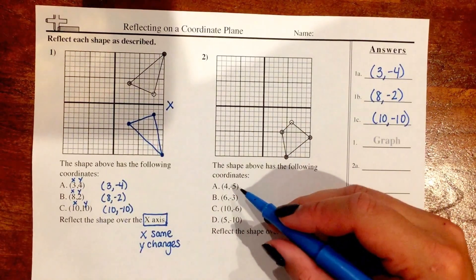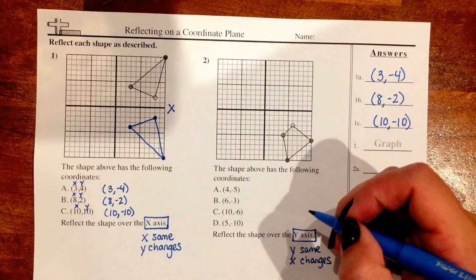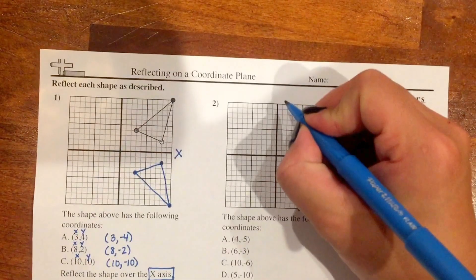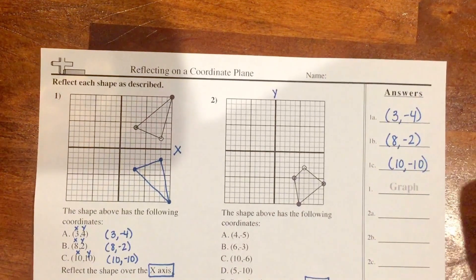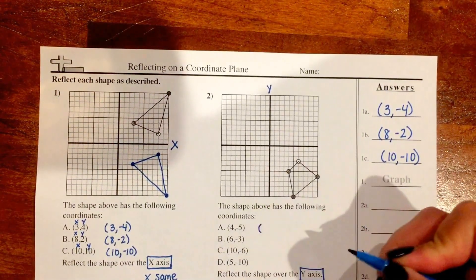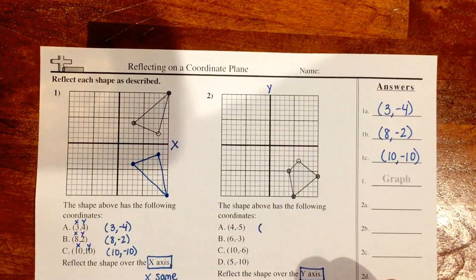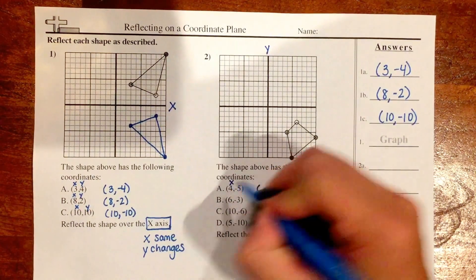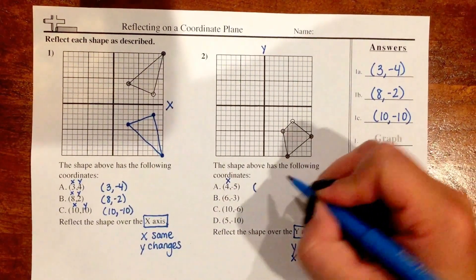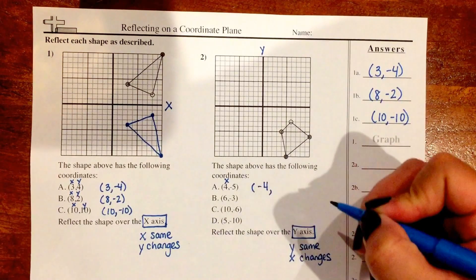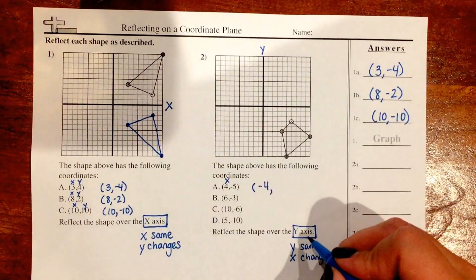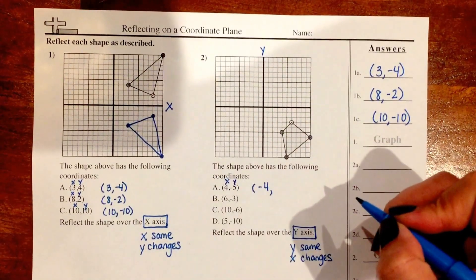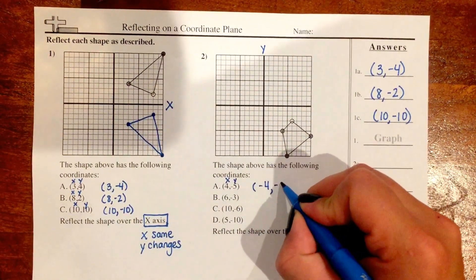Let's look at our first ordered pair which is (4, -5). Now I know that I'm going to be flipping this over the y-axis, which is my vertical axis. Since my x is the one that changes and my x is 4, I'm going to change it to its opposite which is -4, because when you flip over the y-axis the x-coordinate changes. My -5, which is my y-coordinate, is going to stay the same.